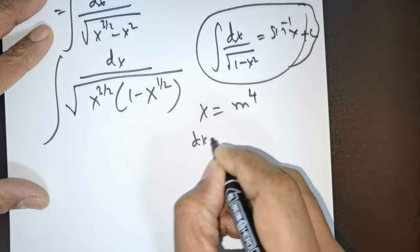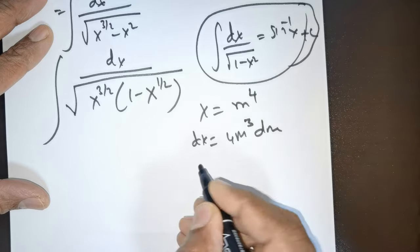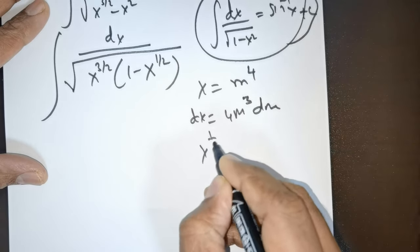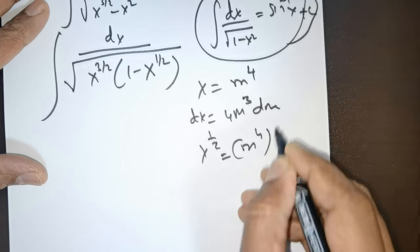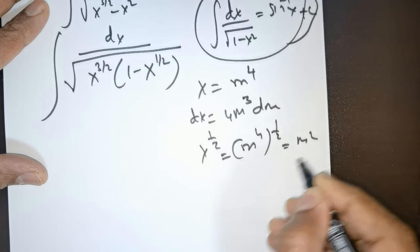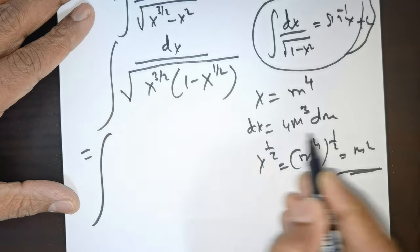So dx equals 4 times m raised to the power of 3 times dm. If I have x raised to power 1/2 and substitute m, this becomes m squared. So I have that requirement. This equals the integral, in place of dx...